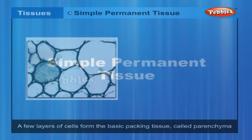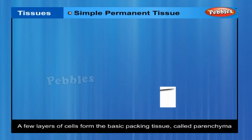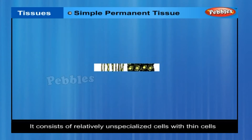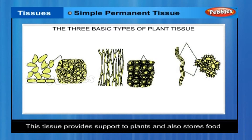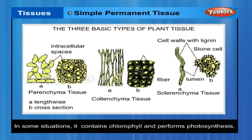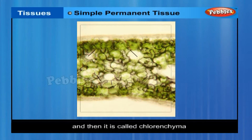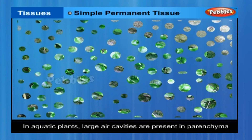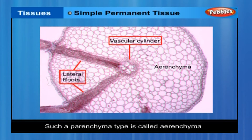Simple Permanent Tissue. A few layers of cells form the basic packing tissue. This tissue is parenchyma, a type of permanent tissue. It consists of relatively unspecialized cells with thin walls. They are live cells and are usually loosely packed. This tissue provides support to plants and also stores food. In some situations, it contains chlorophyll and performs photosynthesis, and then it is called chlorenchyma. In aquatic plants, large air cavities are present in parenchyma to give buoyancy to the plants to help them float.